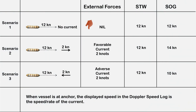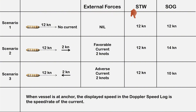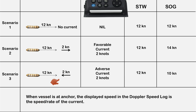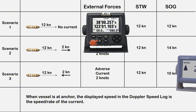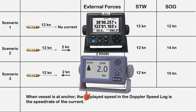This is the summary of the different scenarios discussed earlier, with the ship's heading now changed to an easterly direction. These scenarios are based on 1 hour of steaming time. External forces such as currents have no effect on the ship's speed through water; however, they do affect the speed over ground. When the vessel is at anchor, the speed displayed on the Doppler speed log represents the speed or rate of the current. While the GPS receiver shows a speed of 0 when the ship is at anchor, the speed log might display 2 knots, indicating the speed of the current.